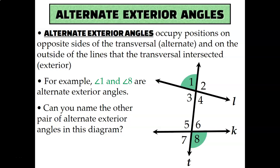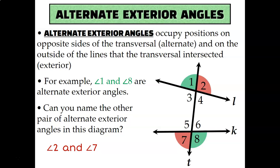Next up we have alternate exterior angles. Alternate means they're on opposite sides of the transversal. Our transversal is line T, and angle 1 is on the left-hand side while angle 8 is on the right-hand side — that makes them alternate. Exterior means they're on the outside of the lines that got intersected by the transversal, outside of line L and line K. So angle 1 and 8 is one pair of alternate exterior angles. The other pair is angle 2 and angle 7.